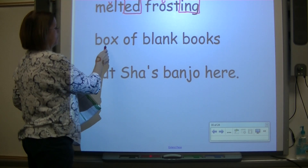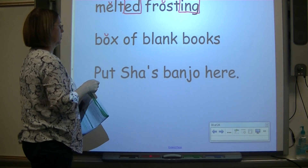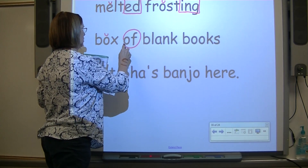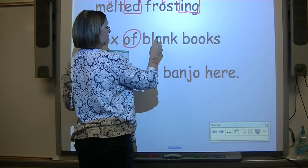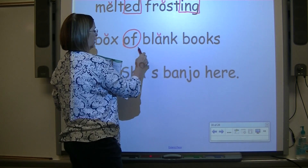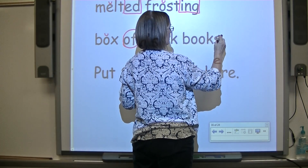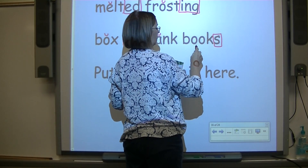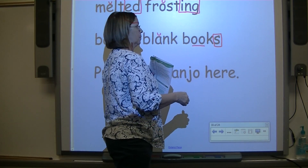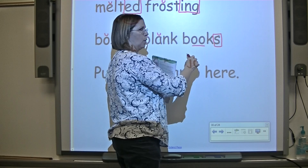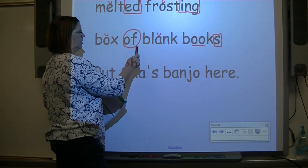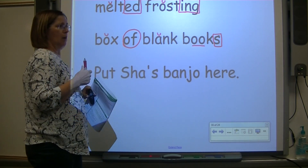Now let's do the next phrase. A vowel followed by a consonant is short — code it with a breve. The word is B-O-X, box. This is a sight word, so we circle it. A vowel followed by a consonant is short — code it with a breve. There's a blend: blank. There's an S on the end — yes, that's a suffix. Digraph OO — underline it. K is an unvoiced sound, so no voice line. Books. So the phrase is: box of blank books.